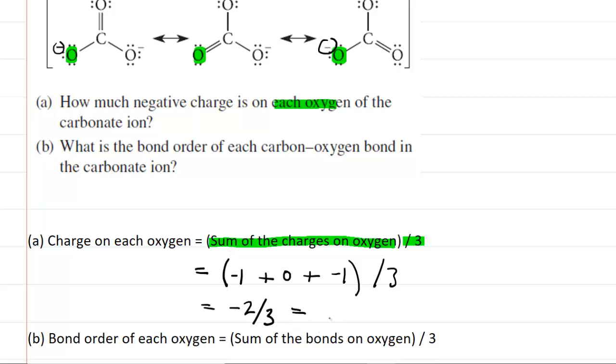And of course, we can also express this in decimal form. This is negative 0.67. So either one of these would be the correct answer.